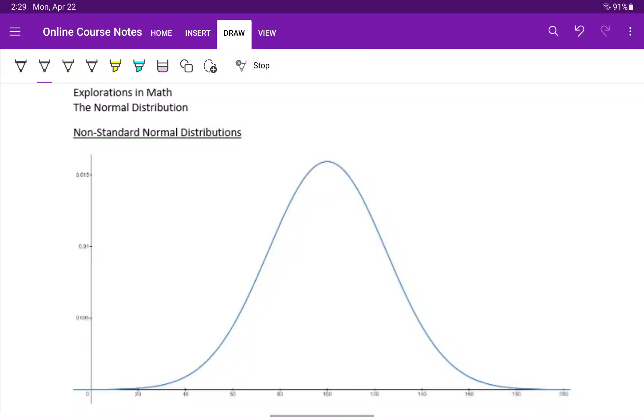Not all normal distributions have a mean of zero and a standard deviation of one. When we have a mean different than zero or a standard deviation different than one, we have a non-standard normal distribution.